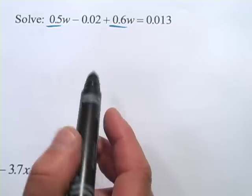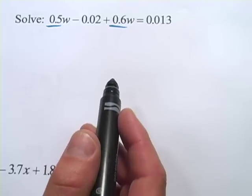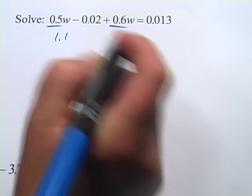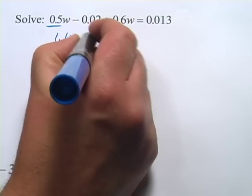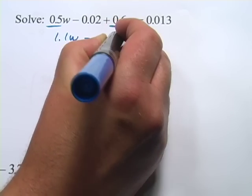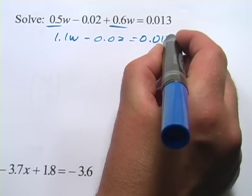So 0.5W plus 0.6W. Well, if you add 0.5 and 0.6, you get 1.1. So that's 1.1W minus 0.02 equals 0.013.